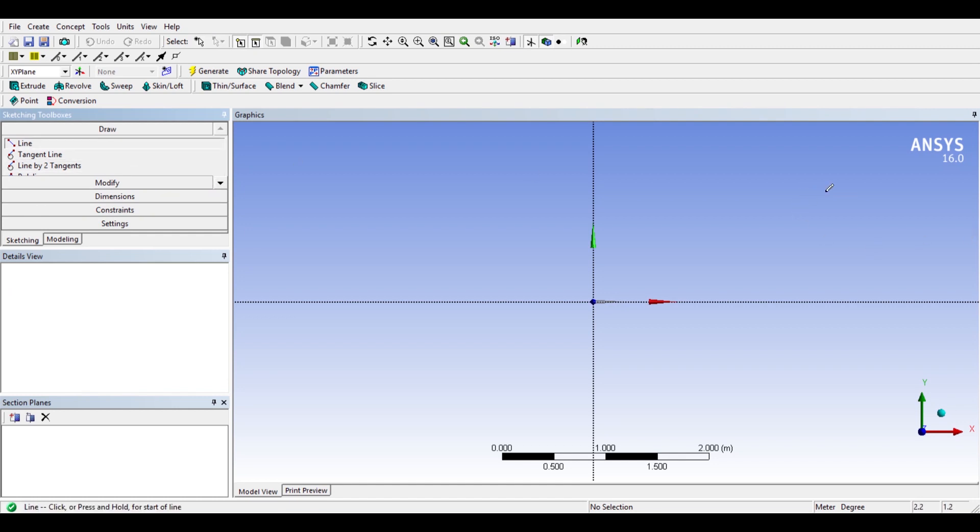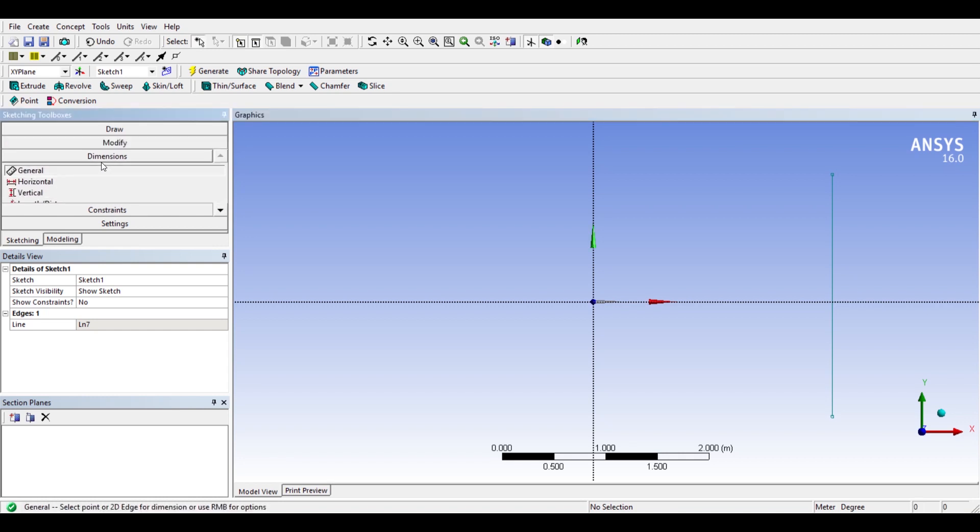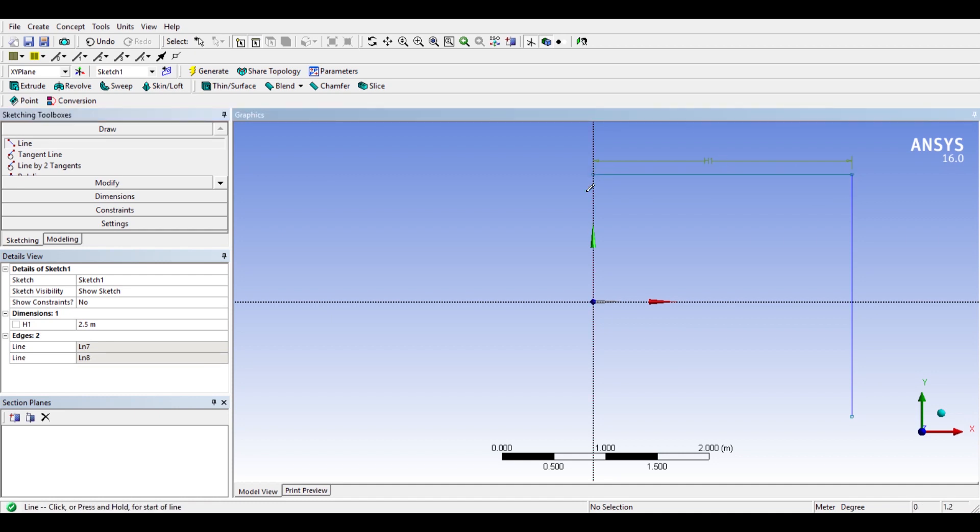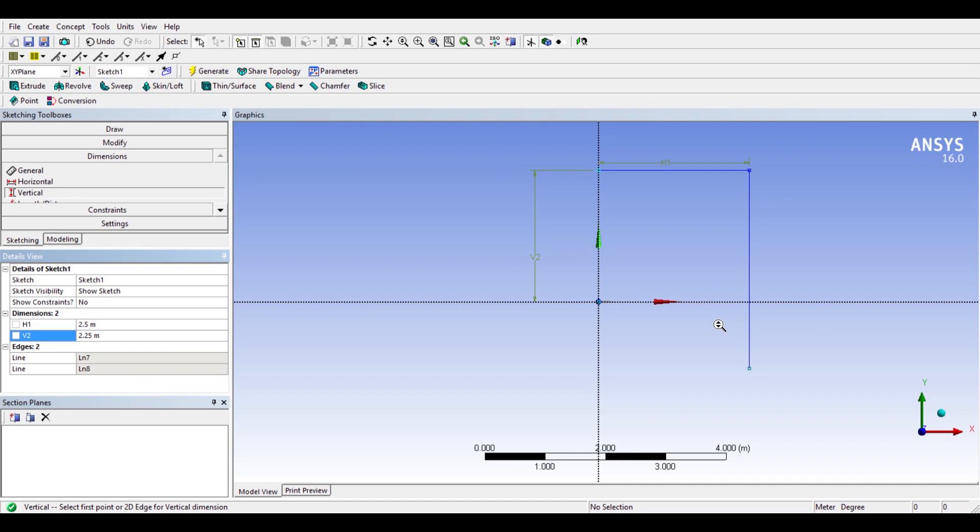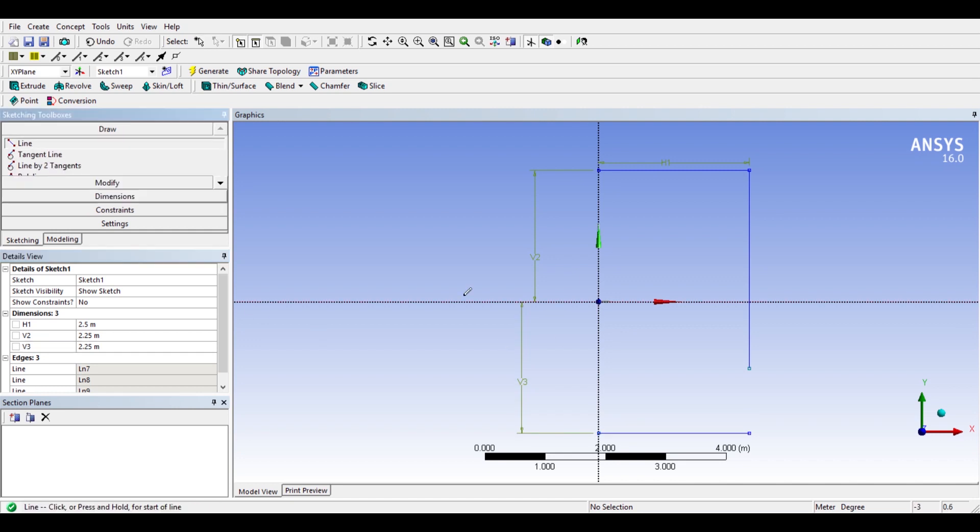So there are different types of domain you can create. Like for example, a rectangular domain or a C domain. For the case of an airfoil, we've decided to make the domain in the shape of a C because it makes sure that the mesh is really well defined for the leading edge. And as Nikhil mentioned, we have to make sure that the distance from the airfoil is about 10 chords. So we make sure that the domain is spaced at about a distance of 10 chords.